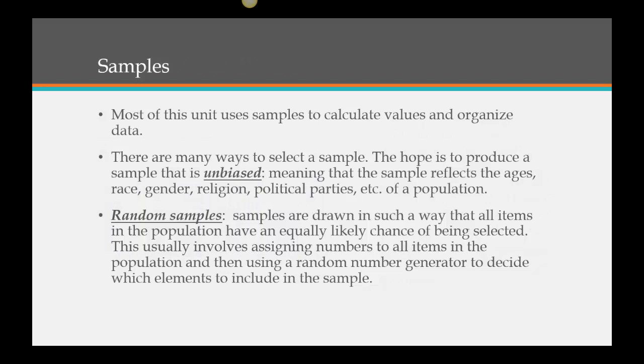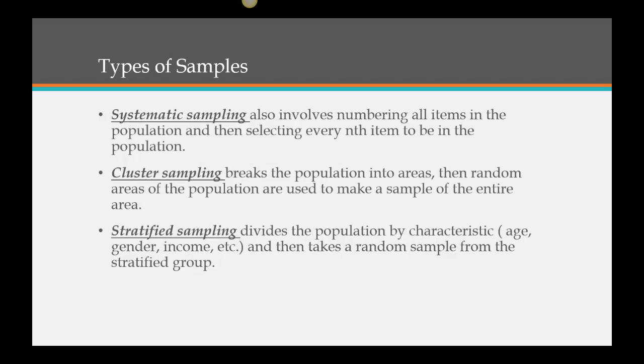Most of this unit uses samples to calculate values and organize data. There are many ways to select a sample. The hope is to produce a sample that is unbiased, meaning the sample reflects the ages, race, gender, religion, political parties, etc. of the population. Random samples are drawn so that all items in the population have an equally likely chance of being selected, usually by assigning numbers and using a random number generator. Systematic sampling also involves numbering all items and then selecting every nth item — say every 10th, 100th, or 1000th.